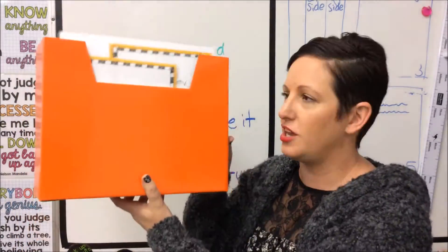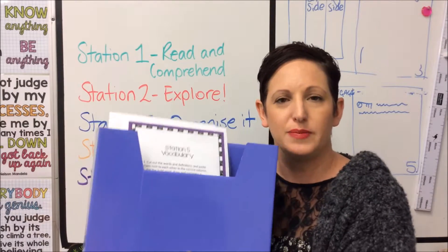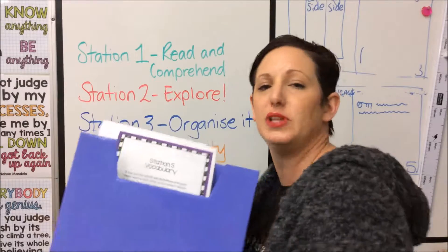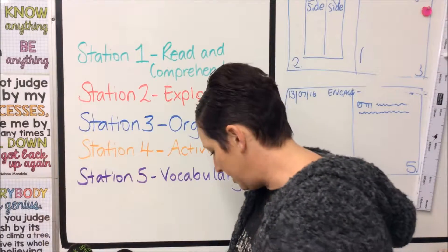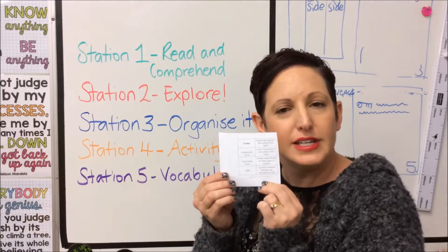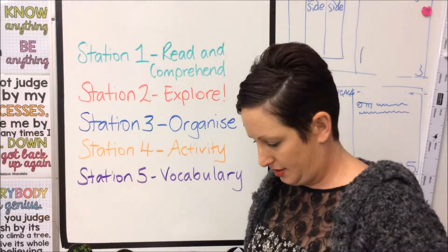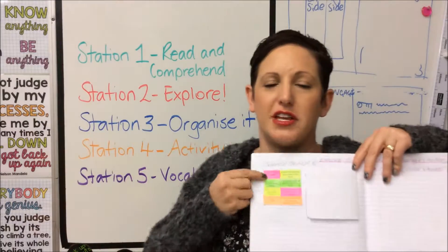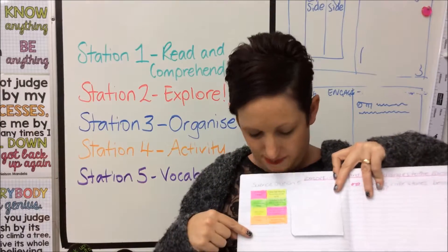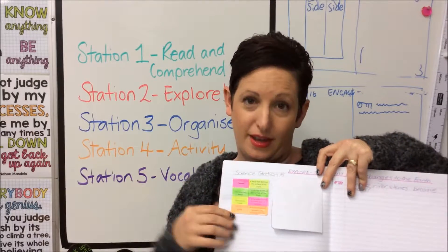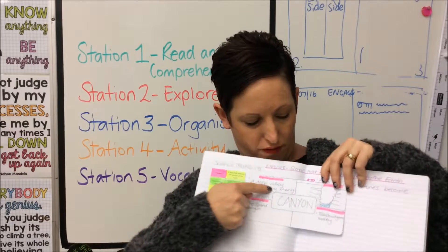Station five is a vocabulary station — it's all about the science content words and vocabulary we are learning about. It has an information sheet with instructions, and you'll also be given a list of words and meanings related to what we're learning. All you need to do is glue that into your book and use a highlighter to match up the word with the correct meaning. After that, you're going to do a vocab four square.